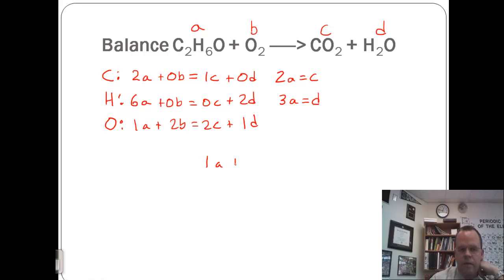So 1A plus 2B equals, for C we can put in 2A, and for D we can put in 3A. So we get, simplify this down, 1A plus 2B equals 4A plus 3A. So 1A plus 2B equals 7A.